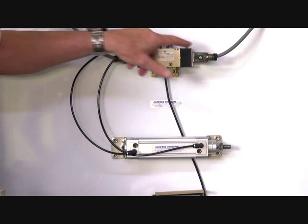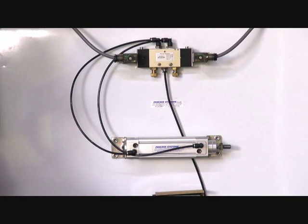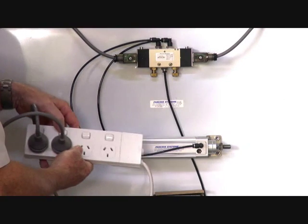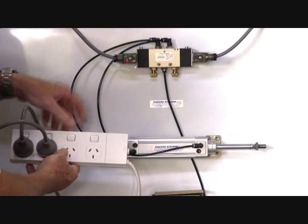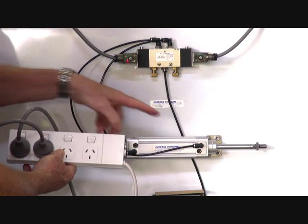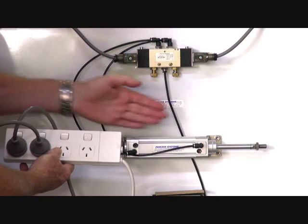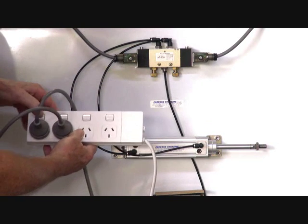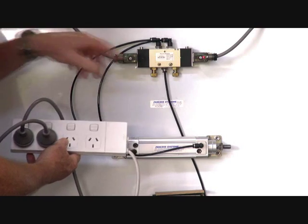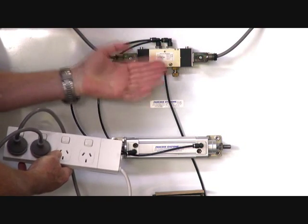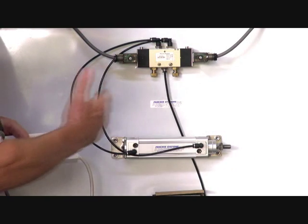The valve has electrical LEDs in the top here. If I turn the power on, you'll see the LED comes on this end, unit goes out. Turn the power off, it stays there. Power's removed, unit is still in that position. Turn the power on the other end, LED comes on, switches back. Turn the power off, it stays there. It's stable in both functions.